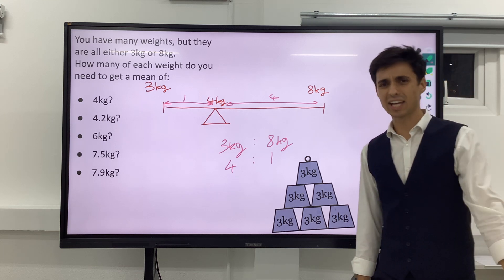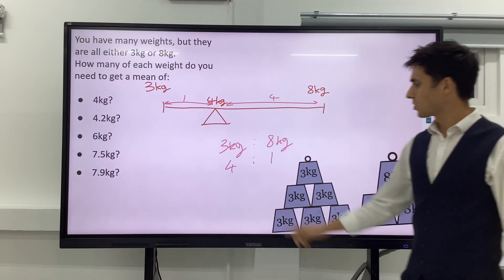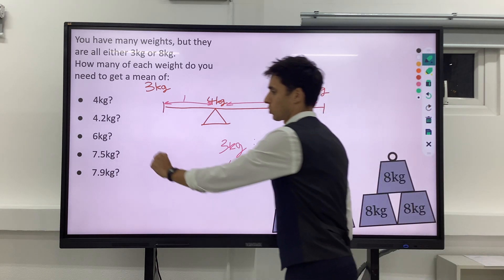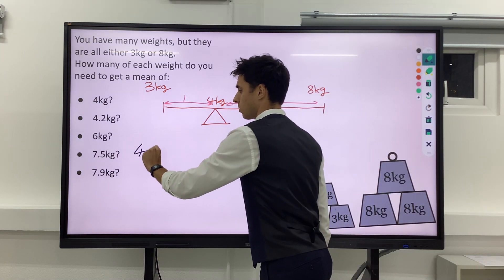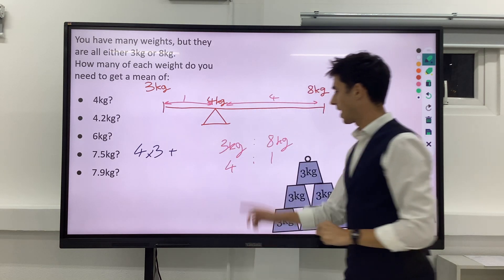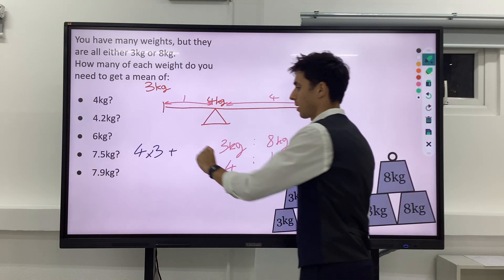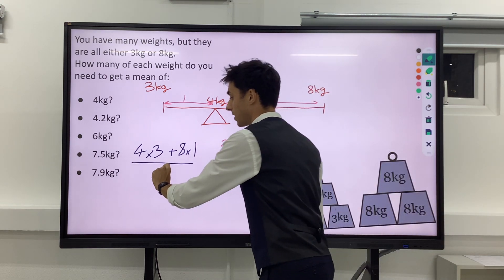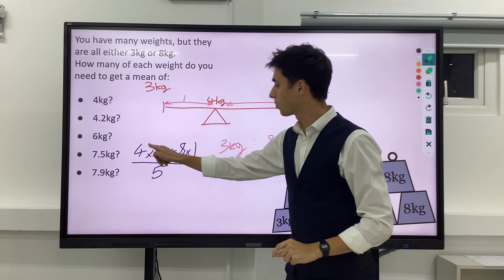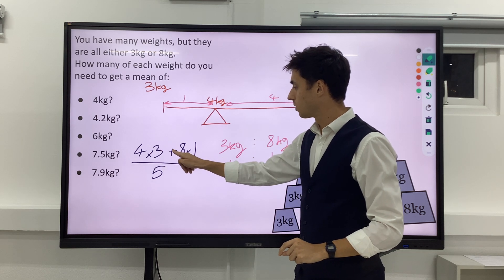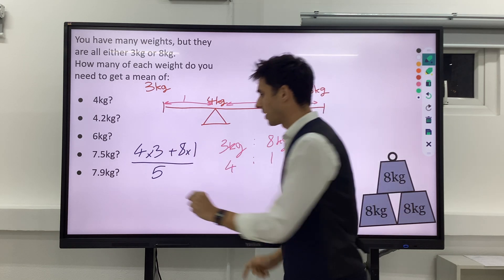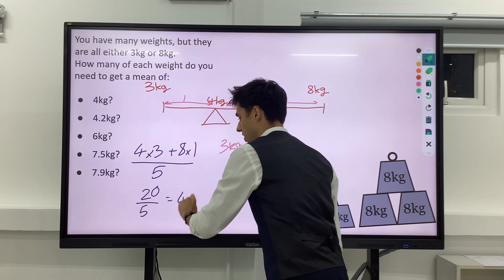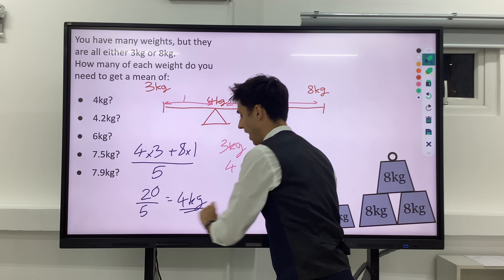Let's check if this actually works. So if we've got 4 3kg weights, we've got 4 lots of 3kg and 1 lot of 8kg. Well, in total we'd have 5, 4 times 3 is 12, plus 8 would give you 20, so that's 20 over 5, which is 4kg on average.